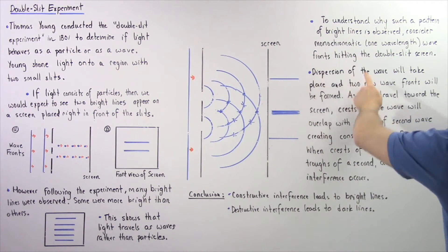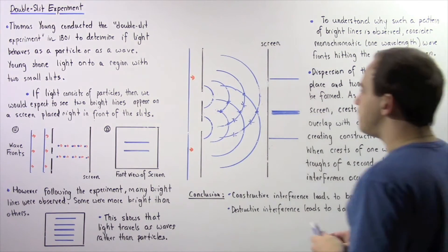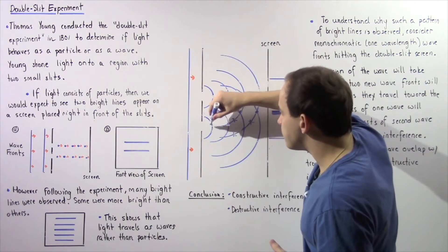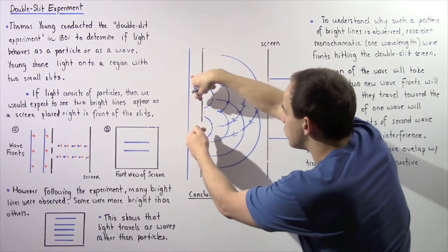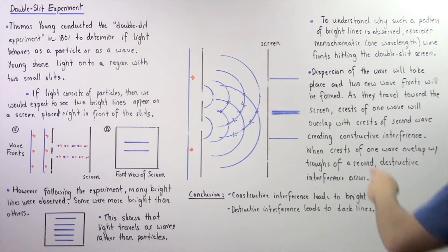we know that dispersion of the wave will take place and two new wave fronts will be formed. So wave front number one and wave front number two, and they will propagate outward toward the screen.